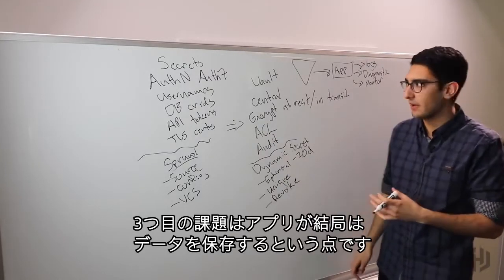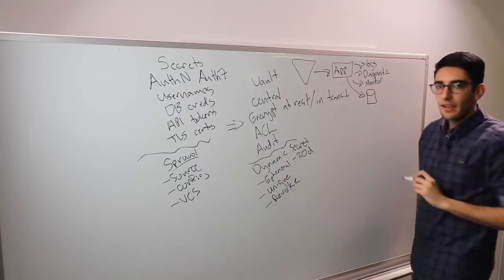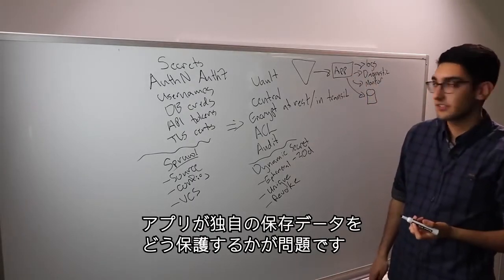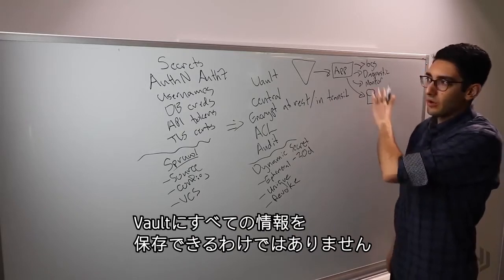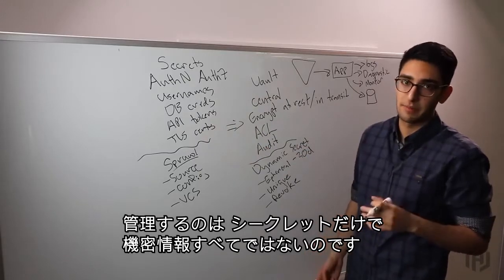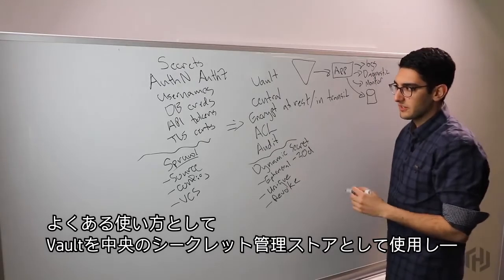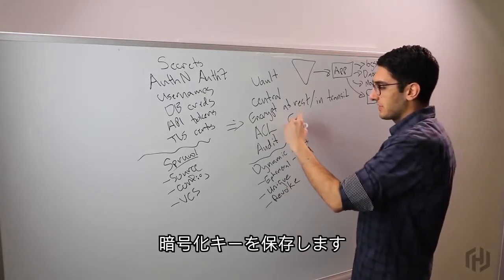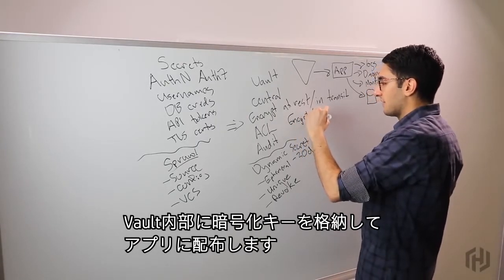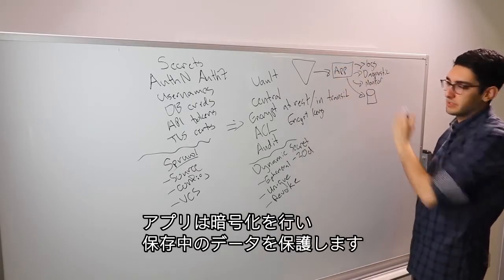The third challenge we found was that applications are often storing data ultimately. The challenge becomes how do the applications protect their own data at rest, because we're not going to be able to store all information within Vault. Vault is meant just to manage secrets, not anything that might be confidential. What we often see is that when Vault is being used as a centralized secret management store, people are storing encryption keys. We might put an encryption key inside of Vault and then distribute that key back out to the application. The application is doing cryptography to protect data at rest.